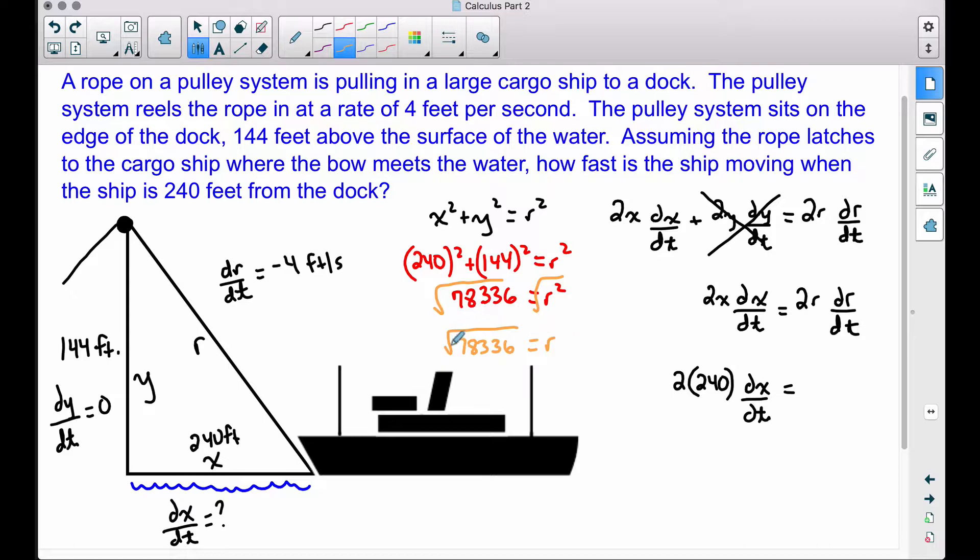we have the length of the rope is the square root of 78,336. In all honesty, I'm not worried about simplifying this. That square root is an irrational number, so I want to leave it just like this, because all I want to do is plug that into R right here. And that's exactly what I've done here. So we have 2 times R that we just found, times dR/dt, which is negative 4.